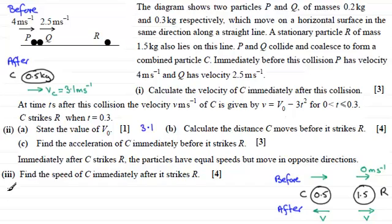So if we just come over here and we'll just say that when t equals 0.3, so V equals V subscript 0 which we found out was 3.1 and then from this we've got to subtract 3t squared and t is 0.3 so it's going to be 3 times 0.3 squared. And if you work this out you end up with 2.83 meters per second. So we can update our diagram now with the fact that C just hits R when it's moving at 2.83 meters per second.